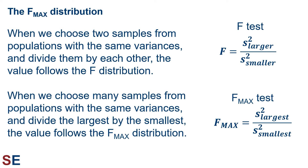It turns out that when we choose many samples from populations with the same variances and divide the largest by the smallest, the value follows the F-max distribution. This will be the basis of our F-max test, which uses the second test statistic shown. We compare this test statistic to the F-max distribution to get the p-value.